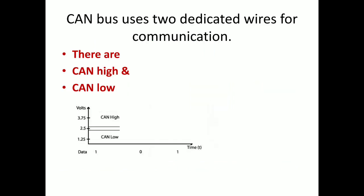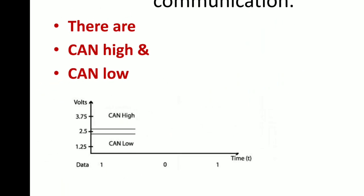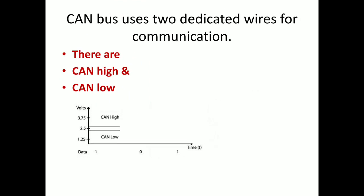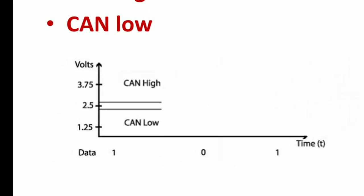CAN bus uses two dedicated wires: one is high and low. This is the architectural flow. Here I have mentioned 1.25 volts to 2.5 volts and 3.75 volts. CAN high is 2.5V plus, and below 2.5V is CAN low. Two signals are being sent.